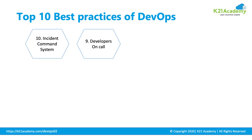Point number nine is Developers on Call. In earlier days, only the support team would be on call every weekend. But consider a scenario where a production deployment happens and the production build fails — it is not possible for the support team to resolve those issues because they did not write the code. The developer who wrote the code may be on holiday. That is why it is best practice to have a developer on call for production or important releases.